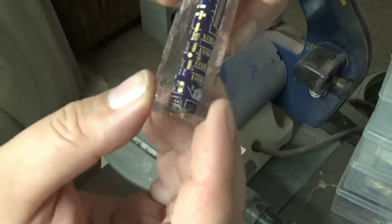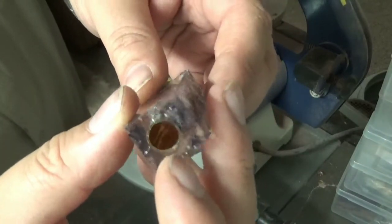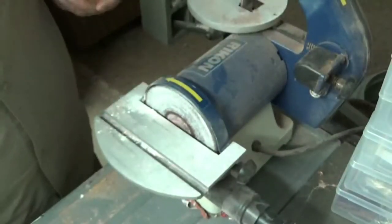Alright, so we've got our circuit board blank here and this thing looks really neat, really cool, but it doesn't quite go all the way down to the brass, so we're just going to clean that up real quick on our disc sander.